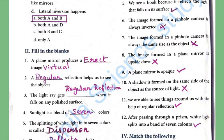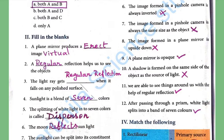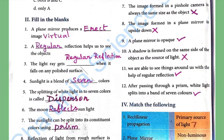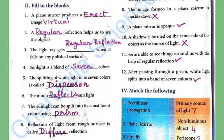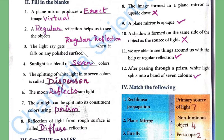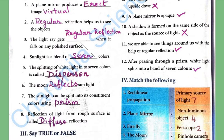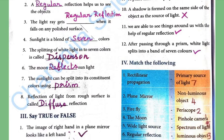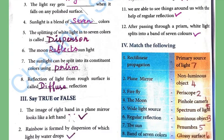Twelfth: After passing through a prism, white light splits into a band of 7 colours. What are those 7 colour names? Please write your answers in the comment box.